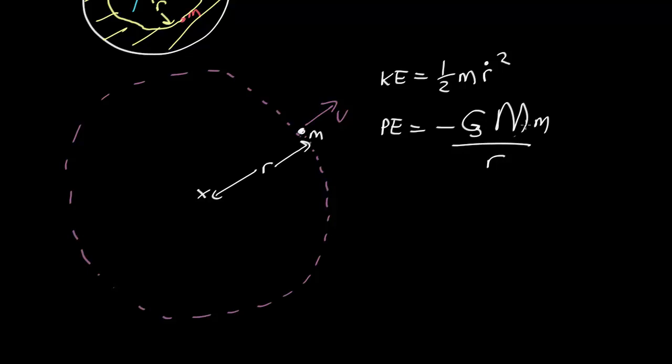What's the mass inside that circle? That's just the volume, which is 4/3 pi r cubed, times the density. So the total energy u is half m r dot squared minus, substituting this in here, 4 pi over 3 G density r squared m.